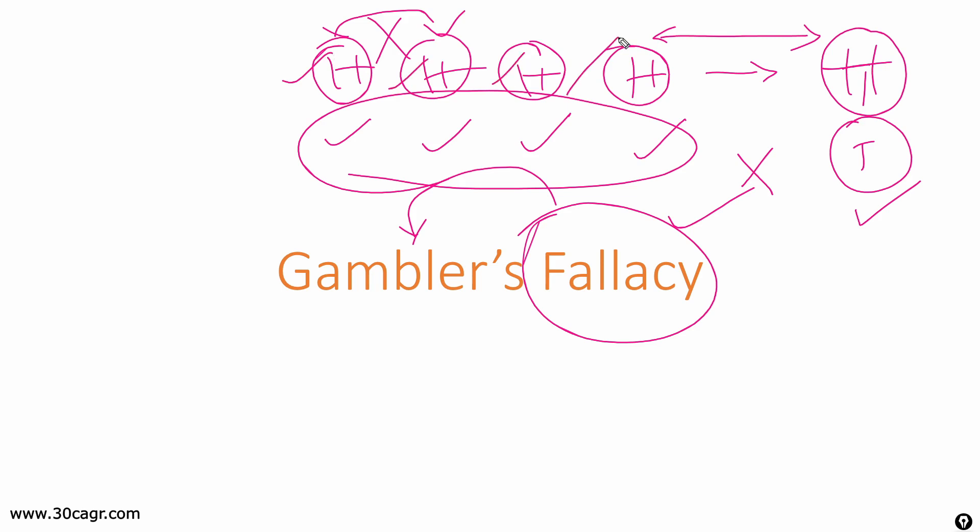So the term independent is what you often find in probability, right? That says that there is no relationship between these two independent events, which also means that this fifth event can also be heads, and sixth can also be heads, seventh, eighth, ninth, tenth can also be heads.